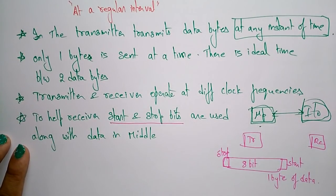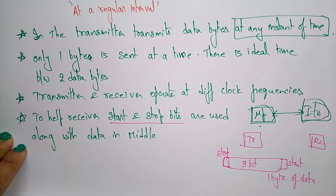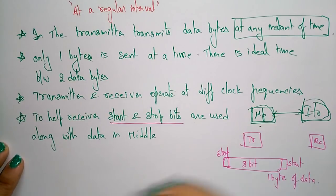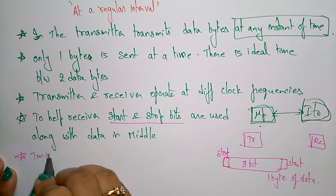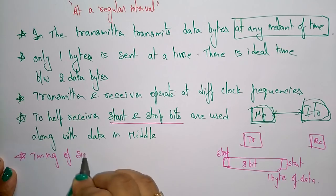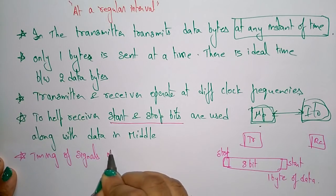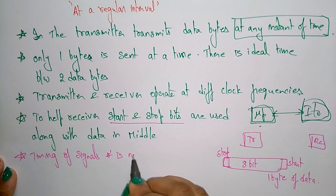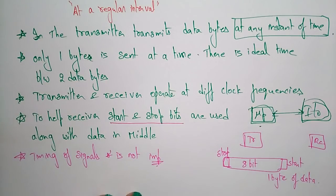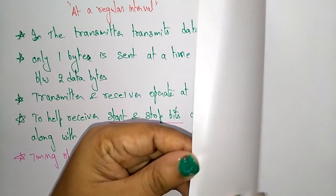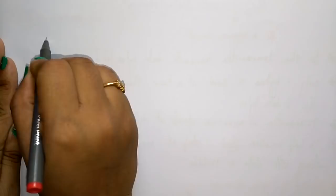In asynchronous data transmission, timing of signals is not important. Because there is idle time between transmissions, the exact timing of signals does not need to be strictly maintained.